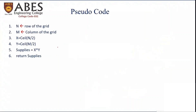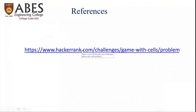Here is the pseudocode: given N (rows) and M (columns), compute x = ceil(N / 2.0) and y = ceil(M / 2.0). The supplies equals x multiplied by y. Finally, return the supplies.